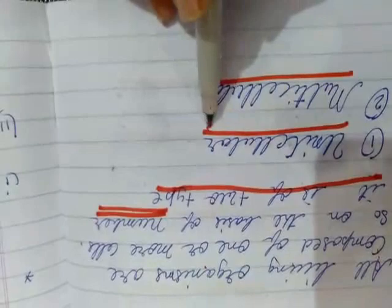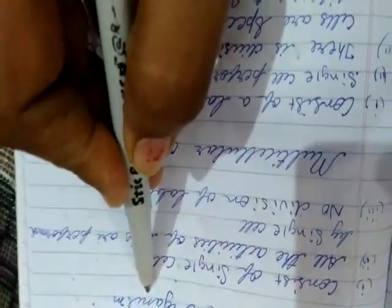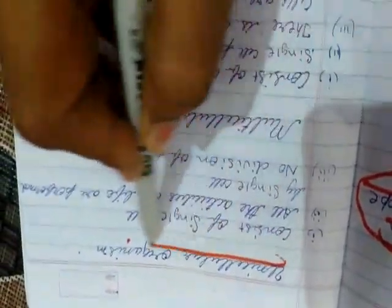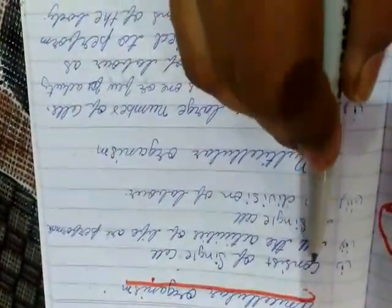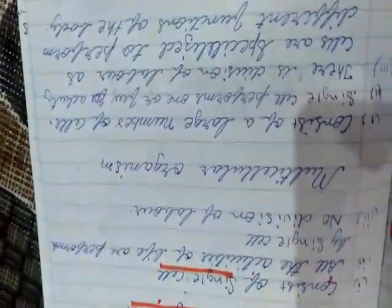Unicellular and multicellular. The characteristics of unicellular organisms are: it consists of a single cell.